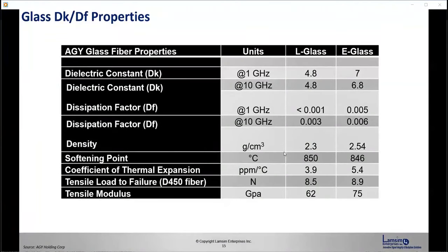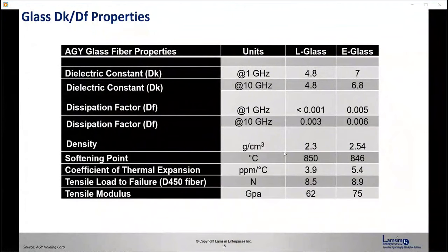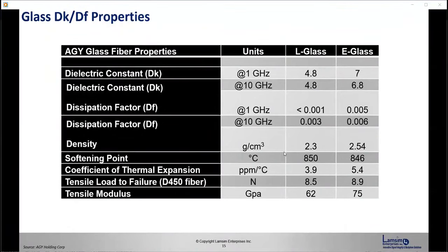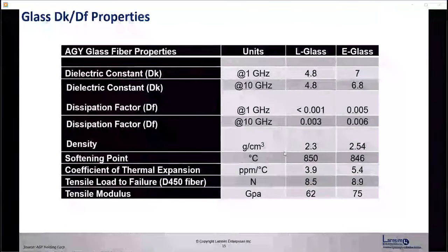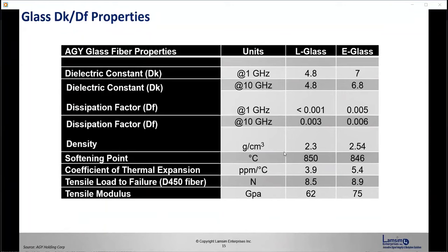Then there are the glass styles. The most popular is the E-glass, which typically had a DK of around 7. But today, with higher speeds and lower loss requirements, we see laminate suppliers moving to L-glass, which has a lower DK and DF for those laminates.